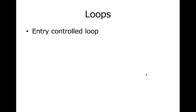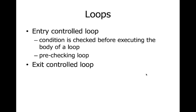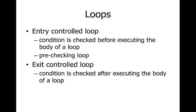There are mainly two types of loops in C. The first is the entry control loop, where the condition is checked before executing the body of the loop — also known as a pre-checking loop. The second is the exit control loop, where the condition is checked after executing the body — meaning the body executes at least once. This is also known as a post-checking loop.